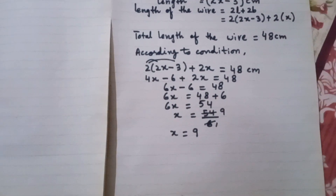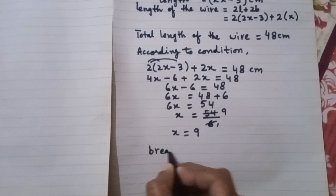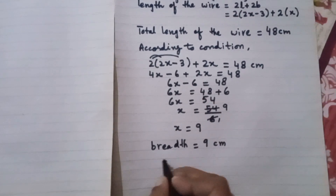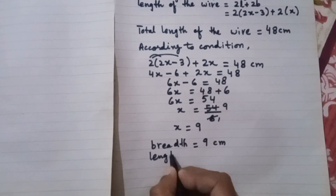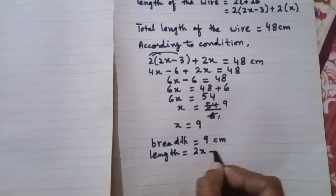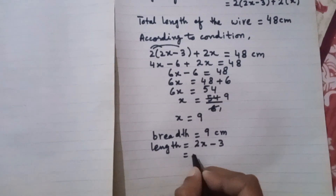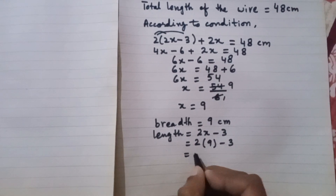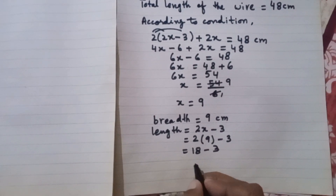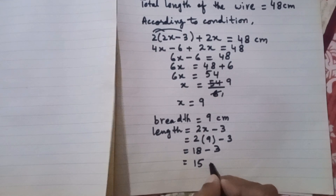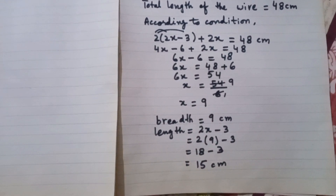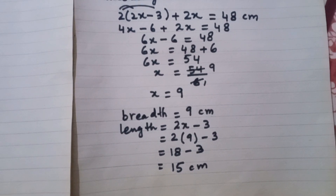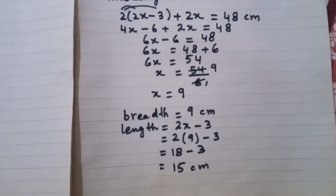The length is 2x minus 3 according to the question. Substituting x equals 9: 2 times 9 minus 3 equals 18 minus 3 equals 15. So the length of the rectangle is 15 centimeters and the breadth is 9 centimeters. Our question is solved.